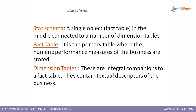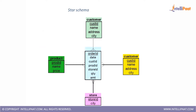Star schema is nothing but having a single fact table which acts as the center table, where all the dimension tables surrounding it are connected to it. You have only one fact table, and all dimension tables are connected to it — that is how star schema looks.